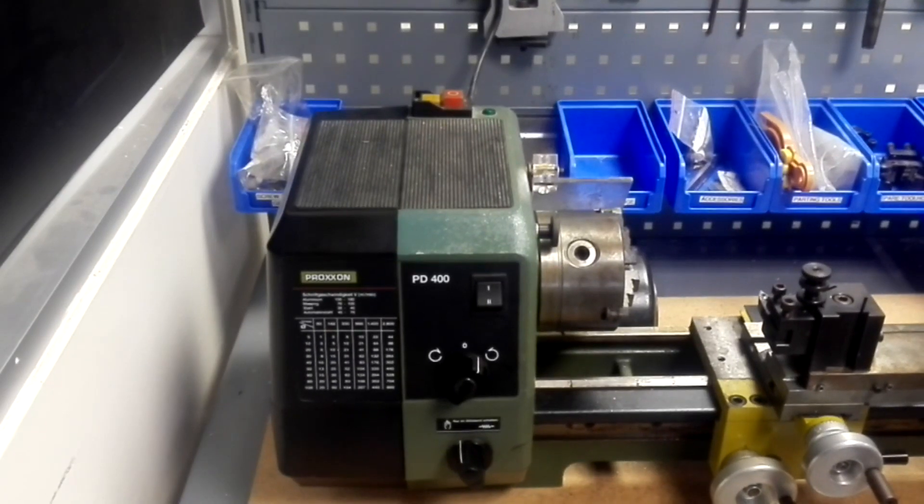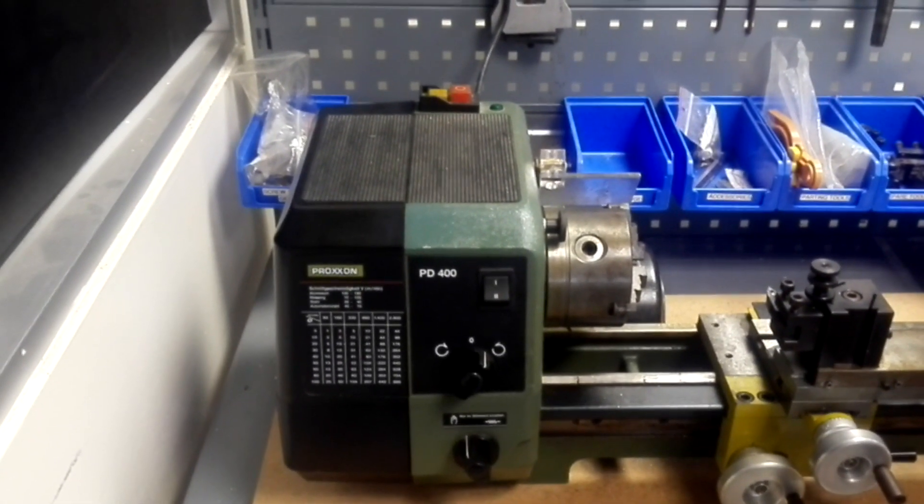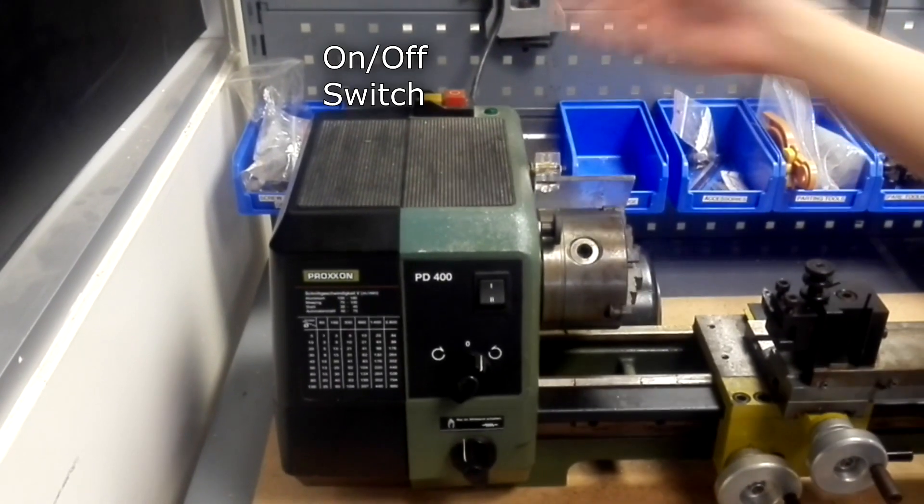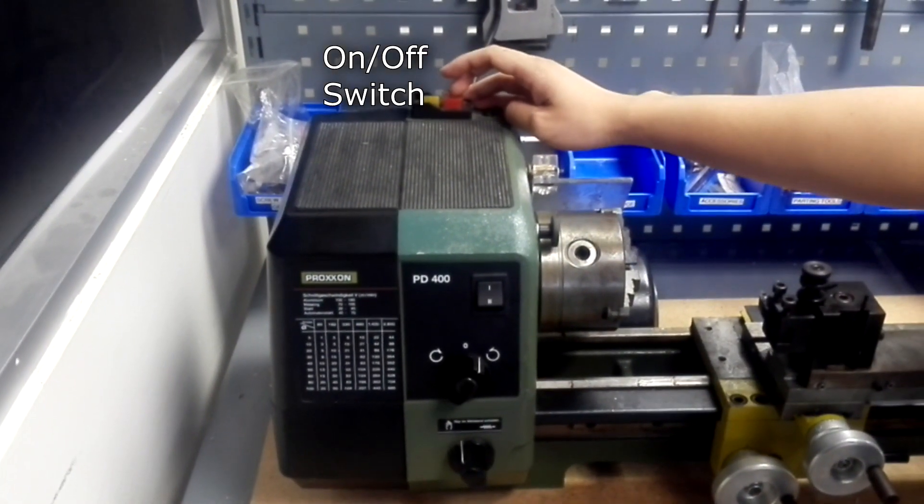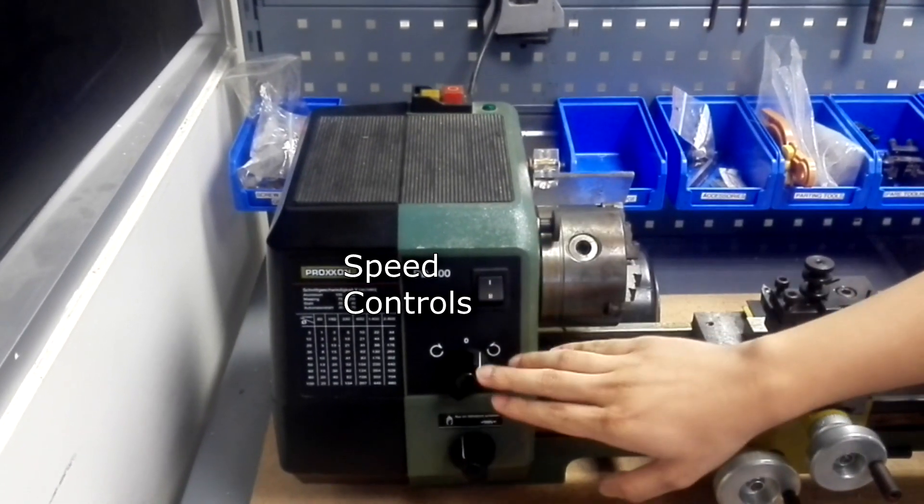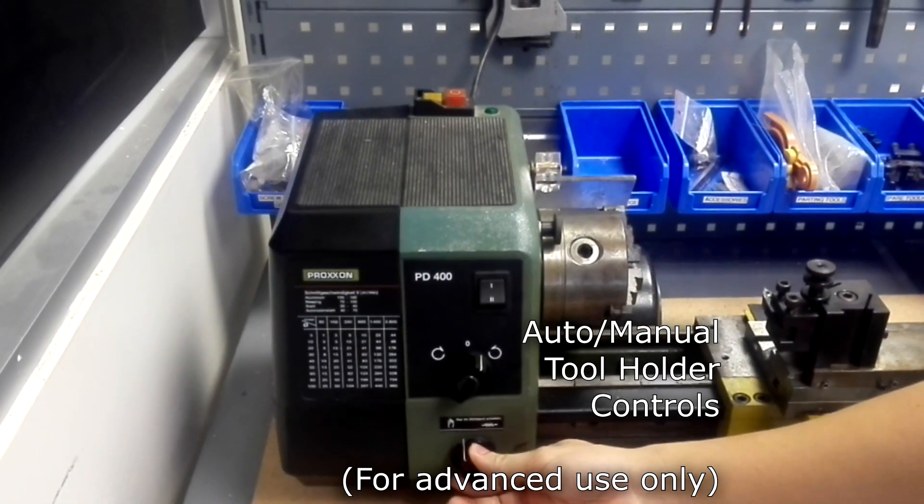Before we begin, it's important to know the parts of the lathe machine. Beginning from the left to right we have the on-off switch, the speed controls, the directional controls, and the auto or manual switch.